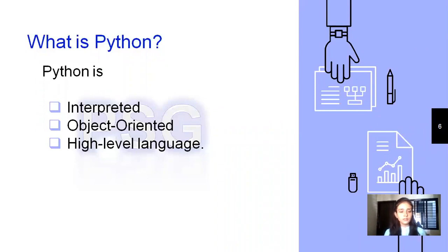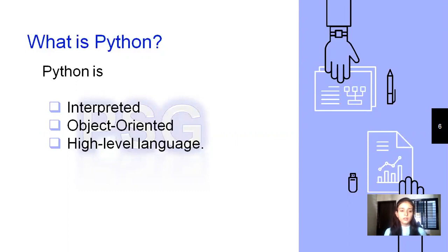The question is whether you can write procedural oriented code in Python or not. The answer is yes, obviously you can write procedural oriented code in Python. So it depends on what the requirement of your application is. According to it, you can make use of procedural oriented code in Python or you can also make object oriented code in Python. Also, Python is a high level language.